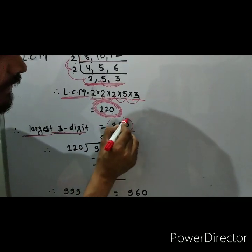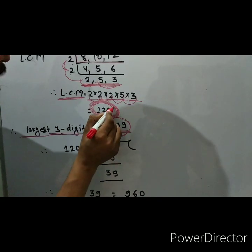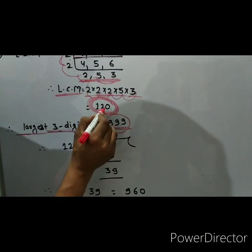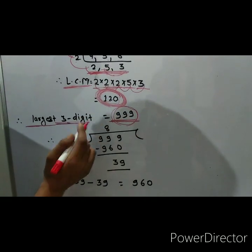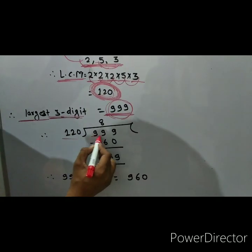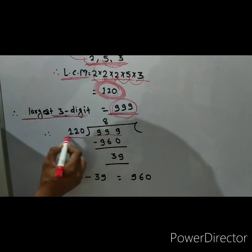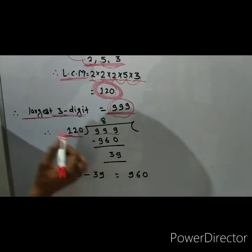Then, the largest 3-digit number, which is 999, we have to do long division with the LCM we found. So we can write like this: 999 divided by 120, which is the LCM we got.